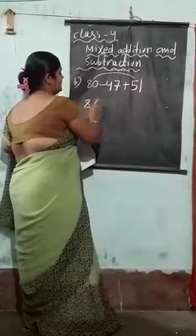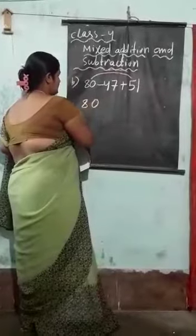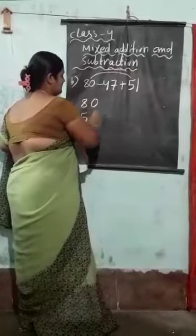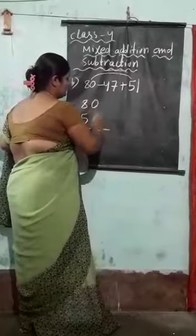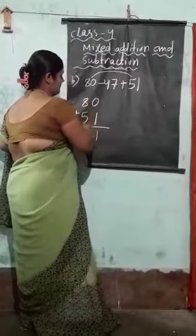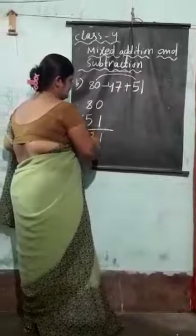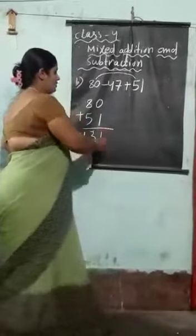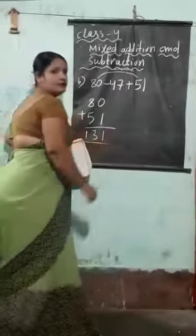Here I have written 80, then it is 51. So, 1 plus 0 is 1, and 8 plus 5 is 13. So, I got 131 here.